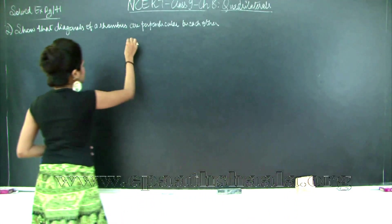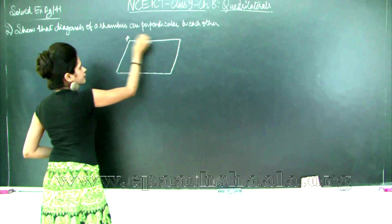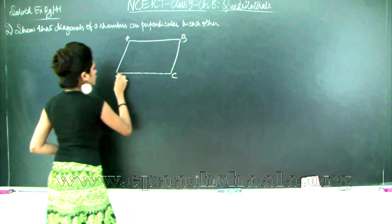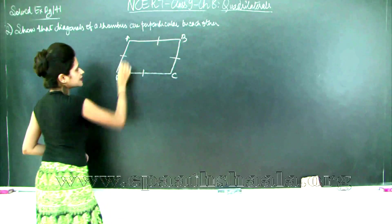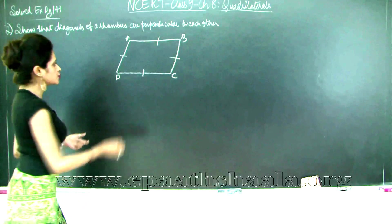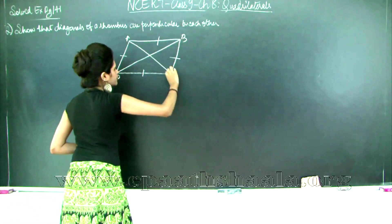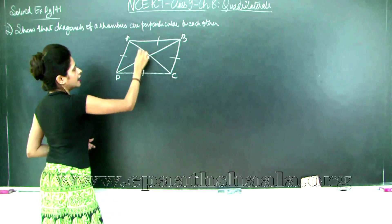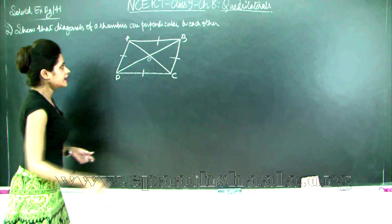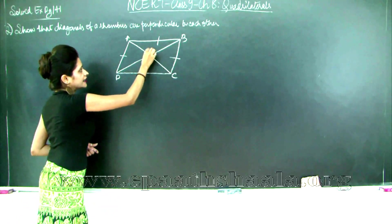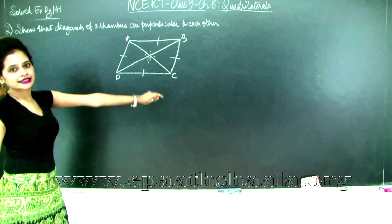Let us first draw our rhombus ABCD and try to understand what needs to be proved. A rhombus is a parallelogram in which all sides are equal to each other. We need to prove that the diagonals are perpendicular to each other — meaning if diagonals AC and BD intersect at point O, then each of the four angles at O is equal to 90 degrees.